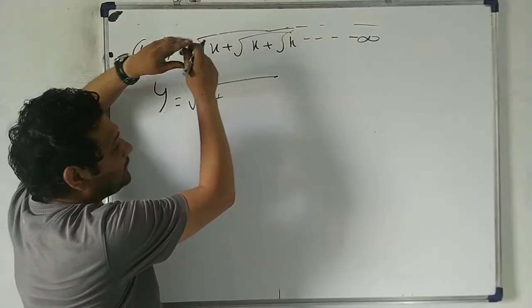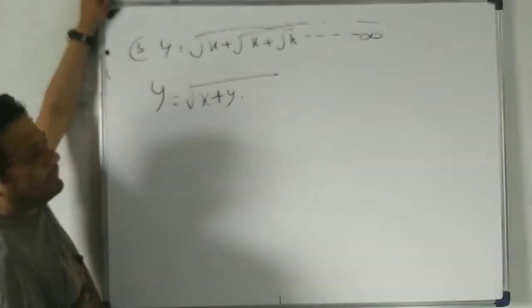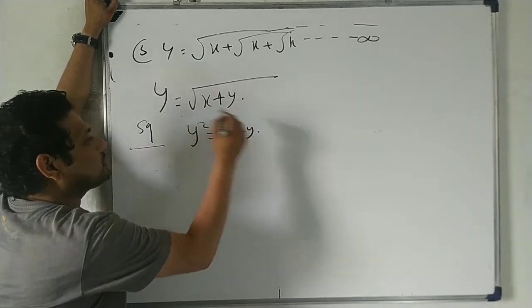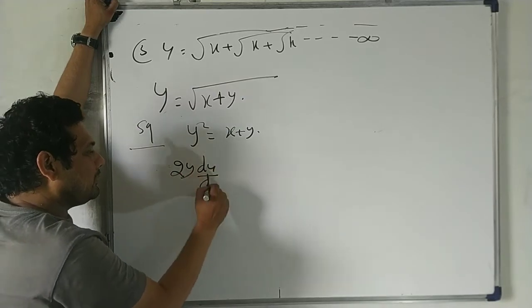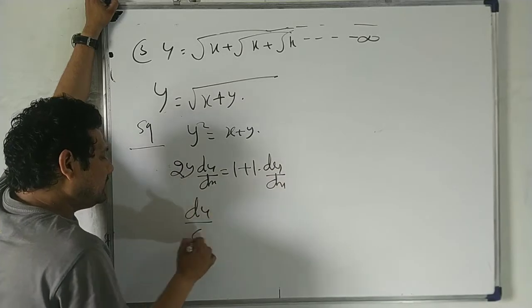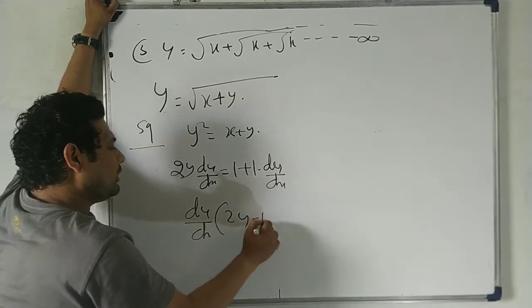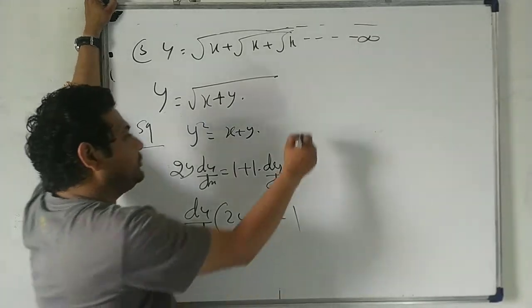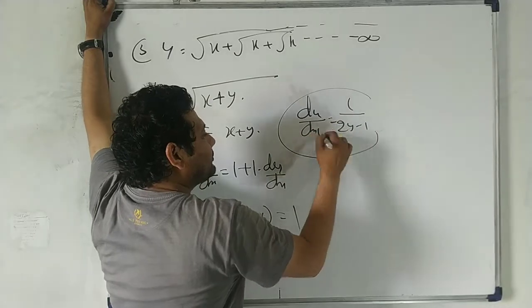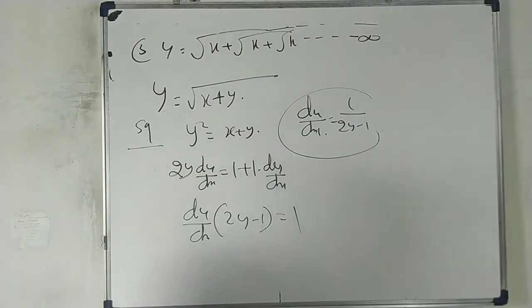Next question: y = √(x + √(x + √(x + ...))) infinite terms. Again, one term छोड़ दो तो वापस y आता है. So y = √(x + y). Squaring both sides: y² = x + y. Differentiating: 2y(dy/dx) = 1 + dy/dx. So dy/dx(2y − 1) = y, giving dy/dx = y/(2y − 1).